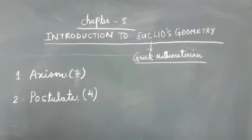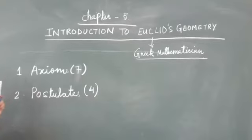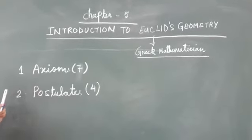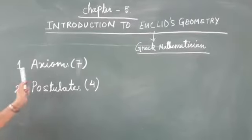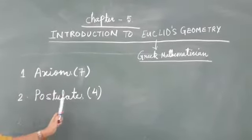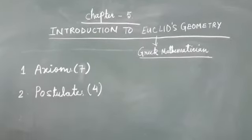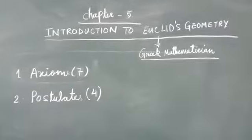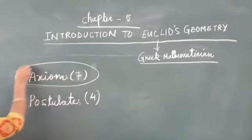Before we start with the exercises, we should know about these terms. These two terms are very important for this chapter: axioms and postulates. You can see I have written 7 here. So axioms are 7 in number and postulates are 4. So let's start with these axioms.